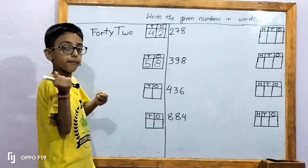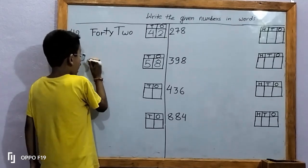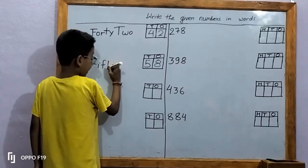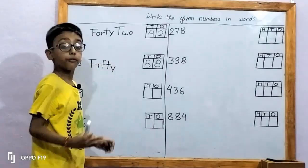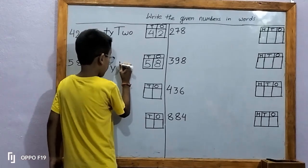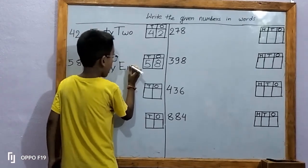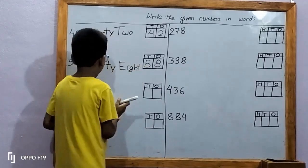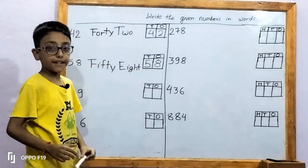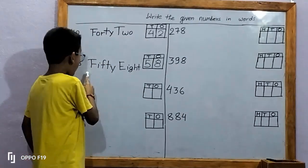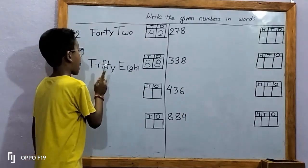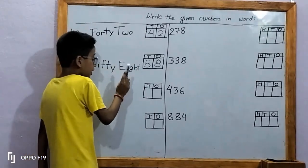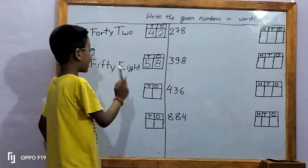Let's write in words. F-I-F-T-Y, fifty. E-I-G-H-T, eight. Fifty-eight. Let's spell fifty-eight: F-I-F-T-Y, E-I-G-H-T, eight. Fifty-eight.